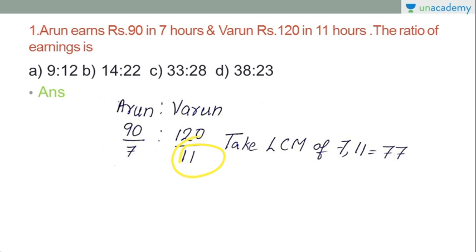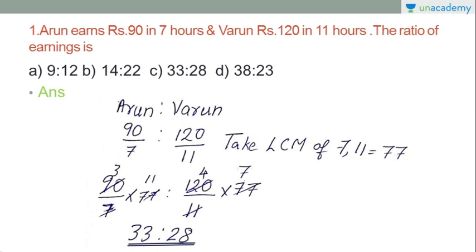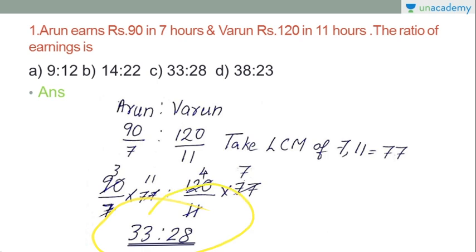We will use LCM for 7 and 11, which gives us 77. You can see on the screen: 77 divided by 11 is 7, and 77 divided by 7 is 11. So we get 90 multiplied by 7 equals 630, and 120 multiplied by 11 equals... simplifying, 30 divided by 3 is 10 and we get 3 into 11 is 33, and 4 into 7 is 28. So the answer is option C: 33 is to 28.